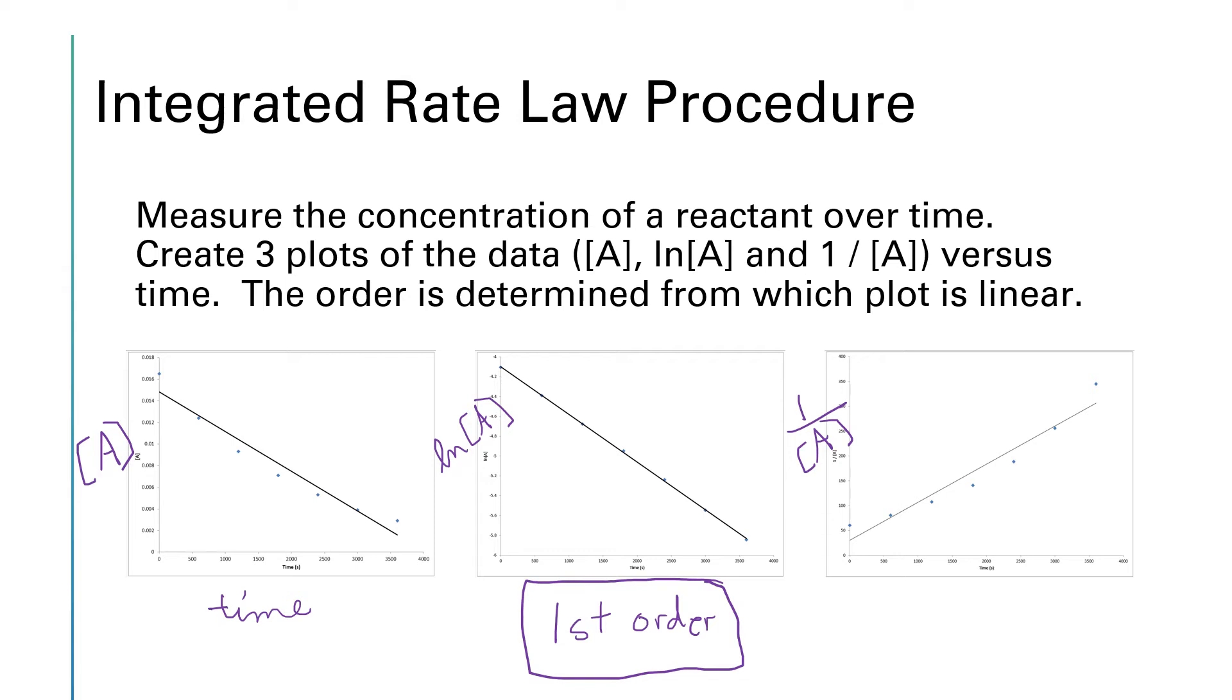Every once in a while, you can't tell just by eyeballing. And there's some statistics that we can run to get something called a correlation coefficient. And we'll look at those correlation coefficients in just a moment, but they'll help us determine mathematically which one of the plots is most linear.